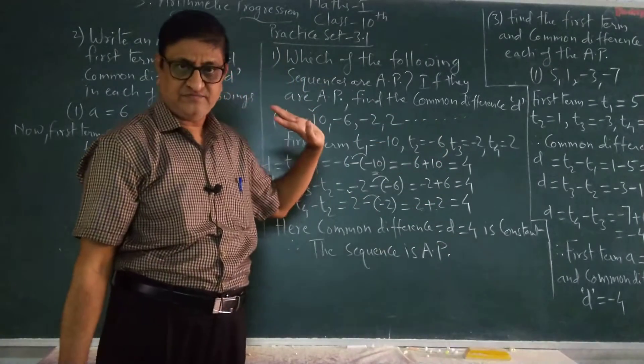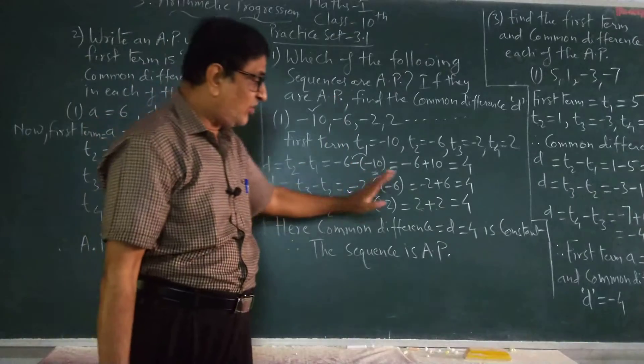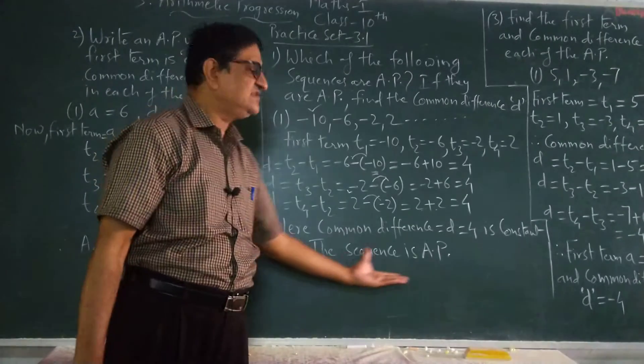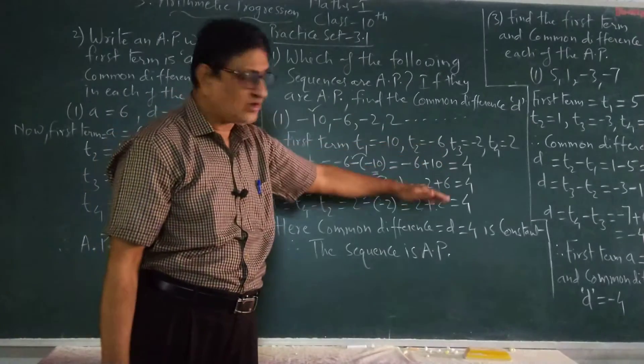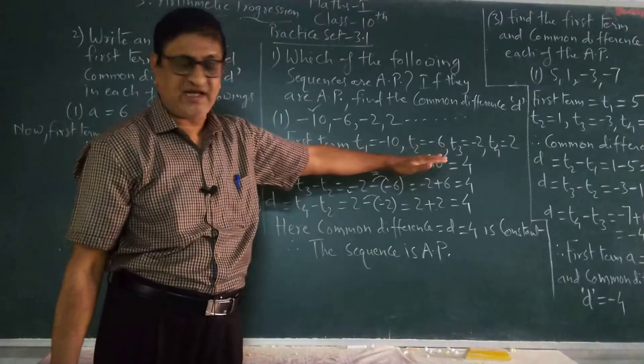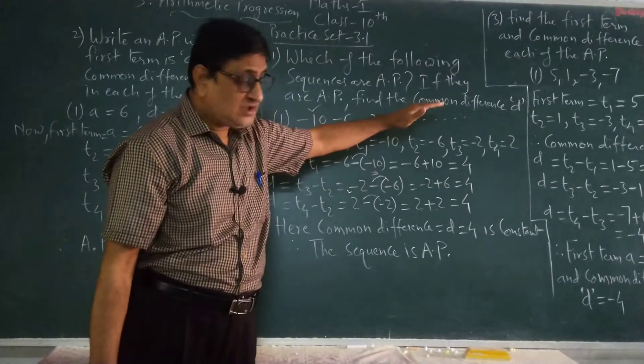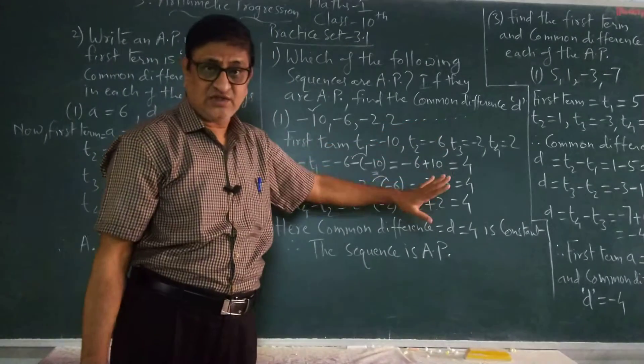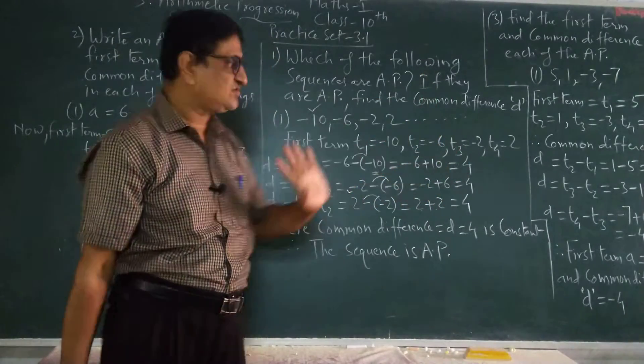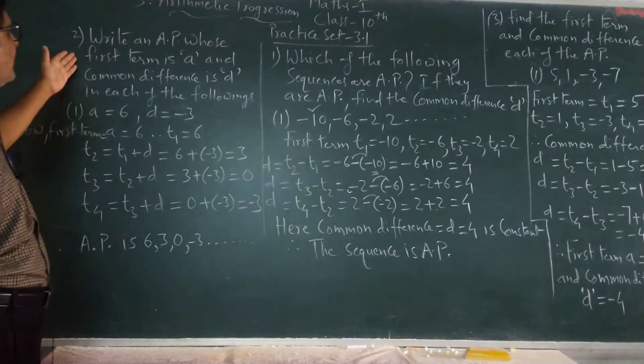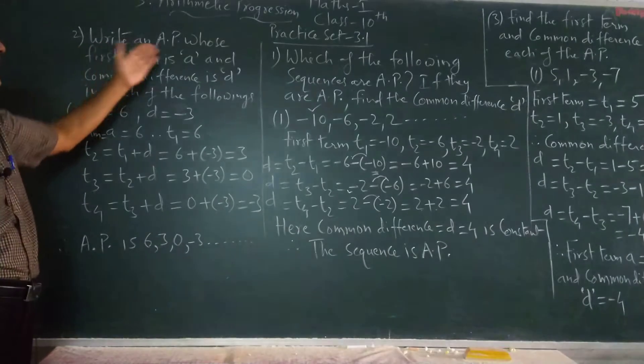The common difference is constant, the sequences of arithmetic progression. The common difference is always constant. If the common difference is not constant, it's not AP.